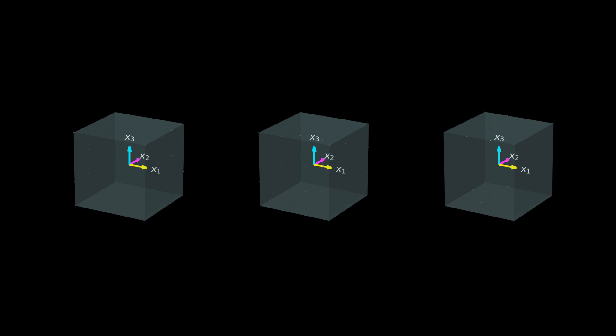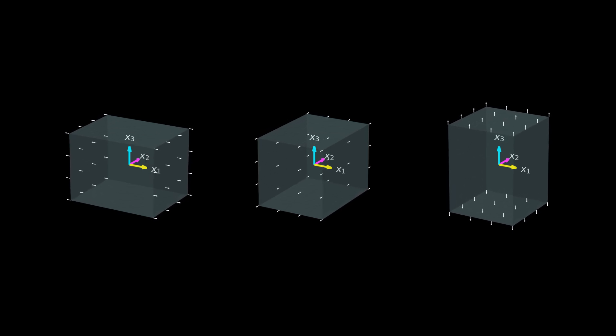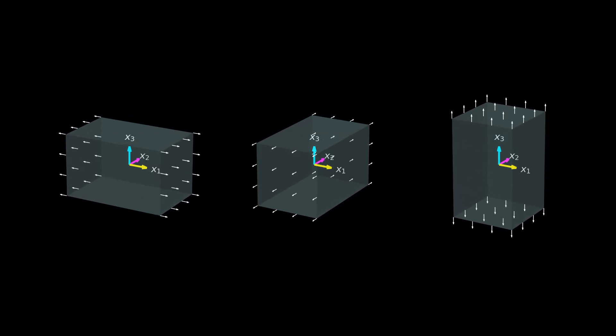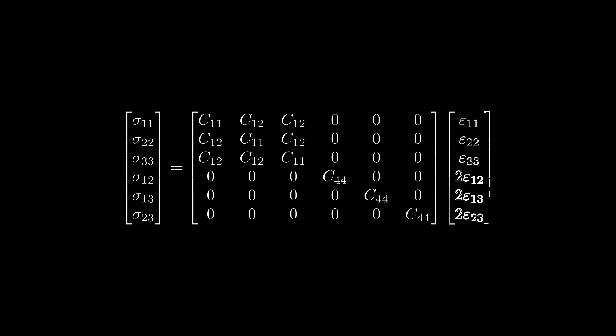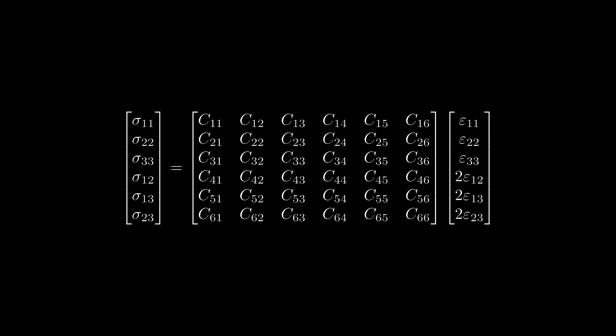Finally, note that we have focused on isotropic material behavior in this video. This means the linear elastic model we derived is only appropriate for materials whose mechanical behavior is independent of the loading direction — as is the case for many metals and polymers. For such materials, many entries in the stiffness and compliance matrices are equal. For anisotropic materials, like wood or composite materials, the stiffness and compliance matrices have more independent components — but we will discuss this in another video.